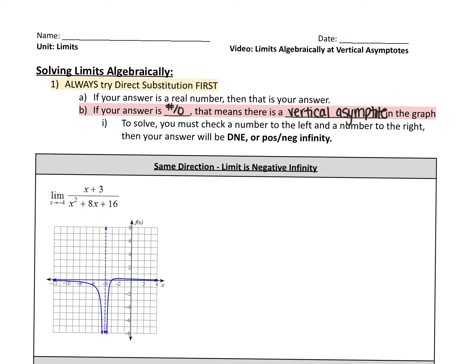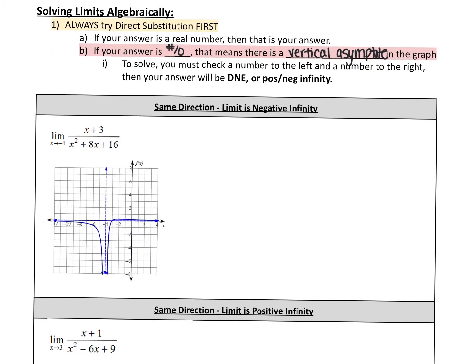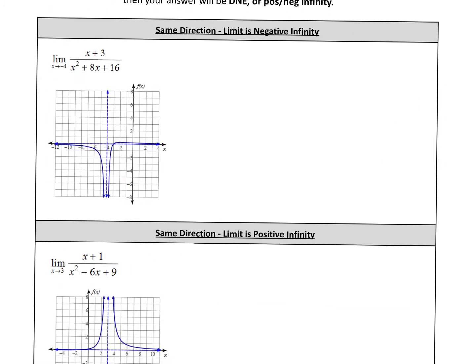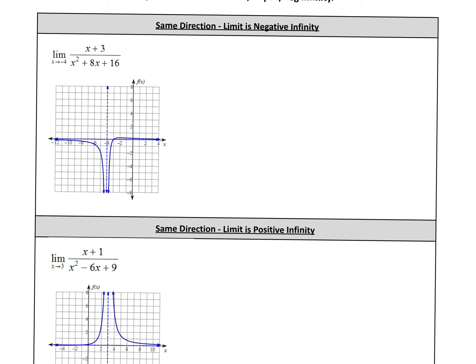With a vertical asymptote, there are really only three visual representations that you can get. So just look at these examples. In example number one, both the left and the right side of the graph at x equals negative four are both going down to negative infinity. So since the left and the right are going to the same place, we can say this limit is negative infinity.